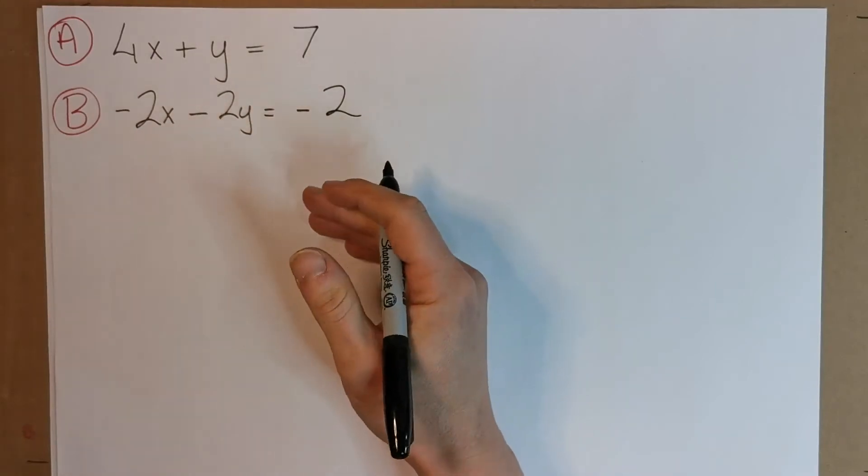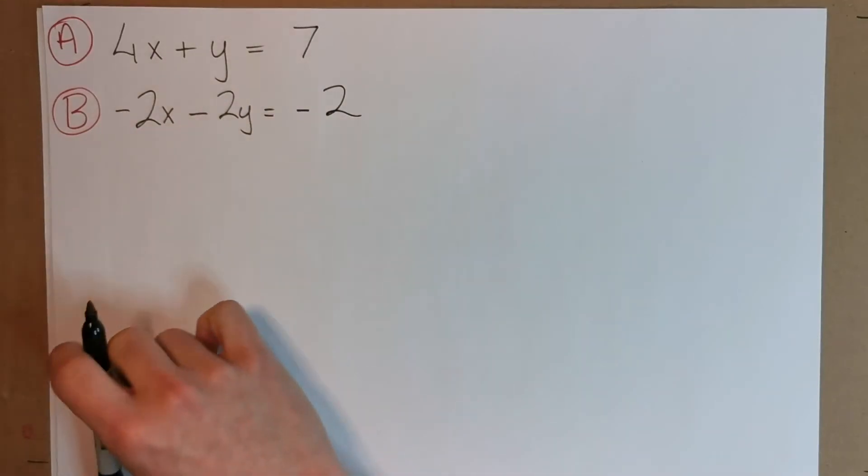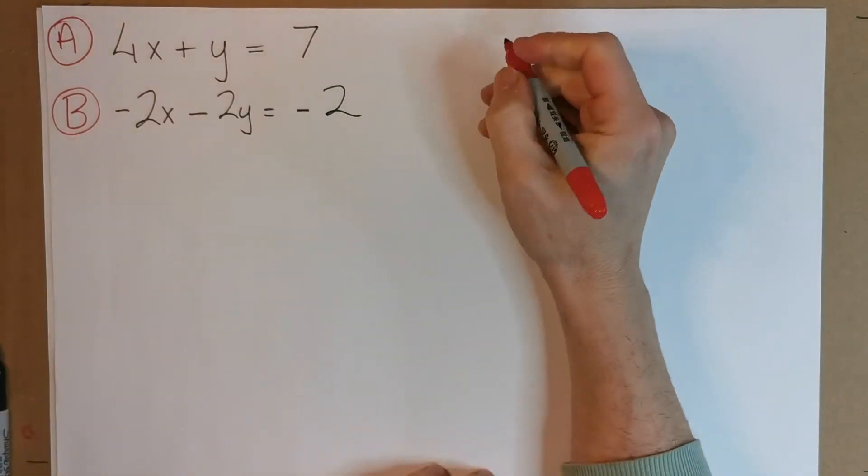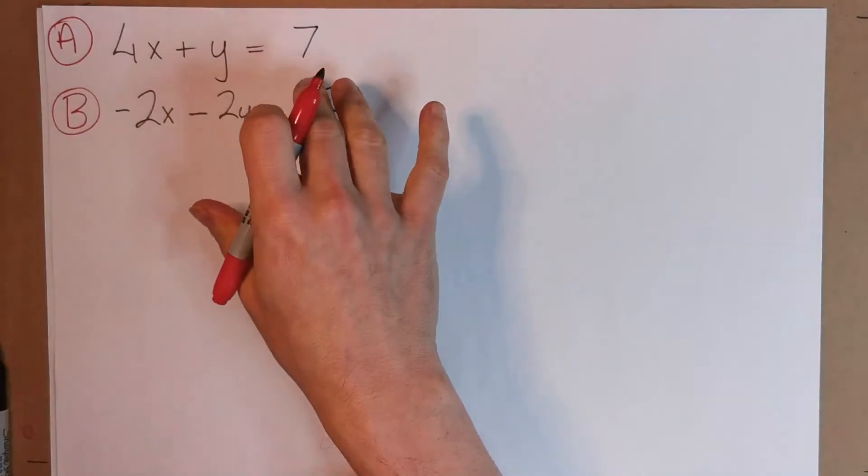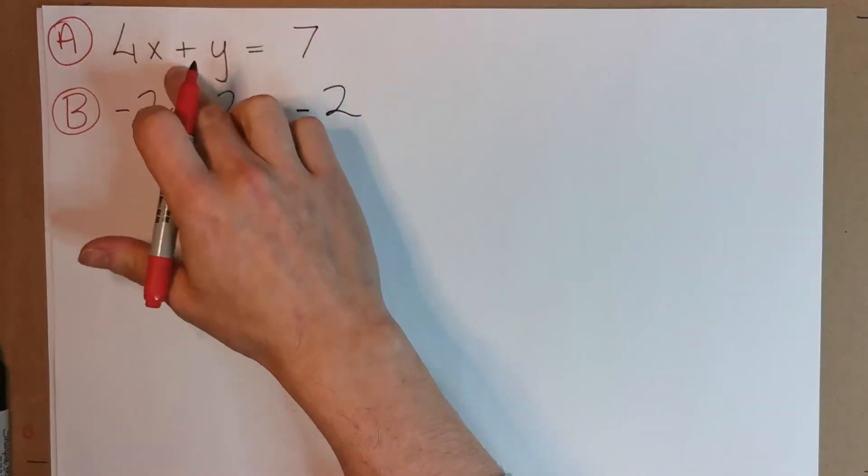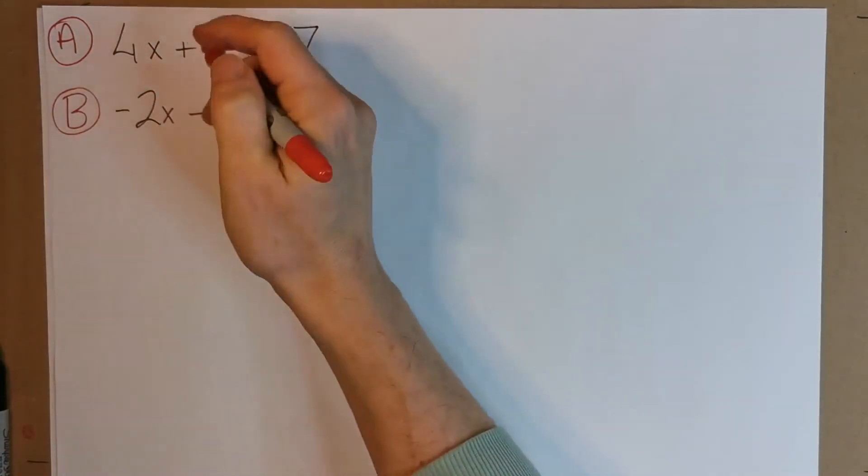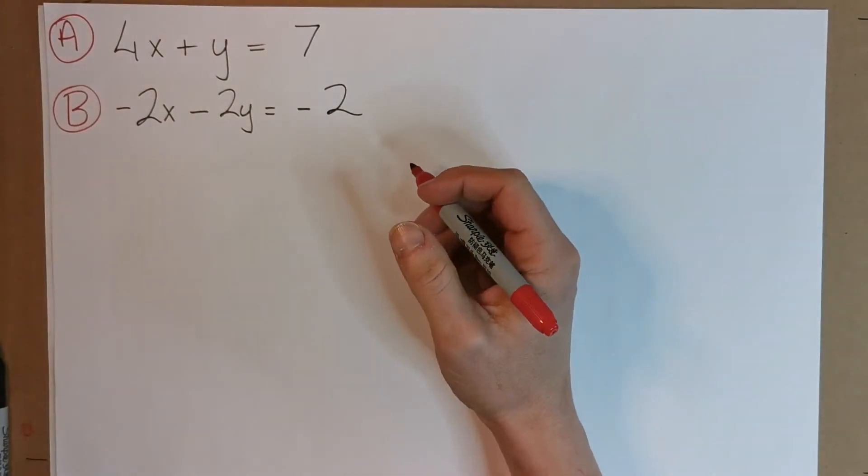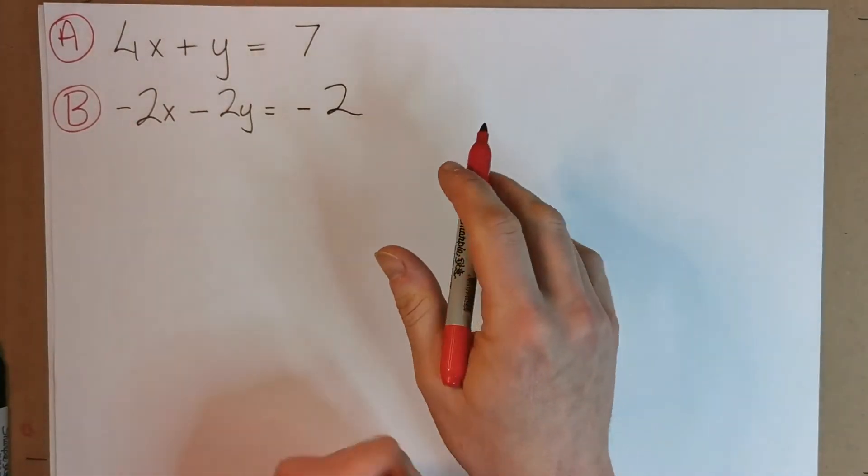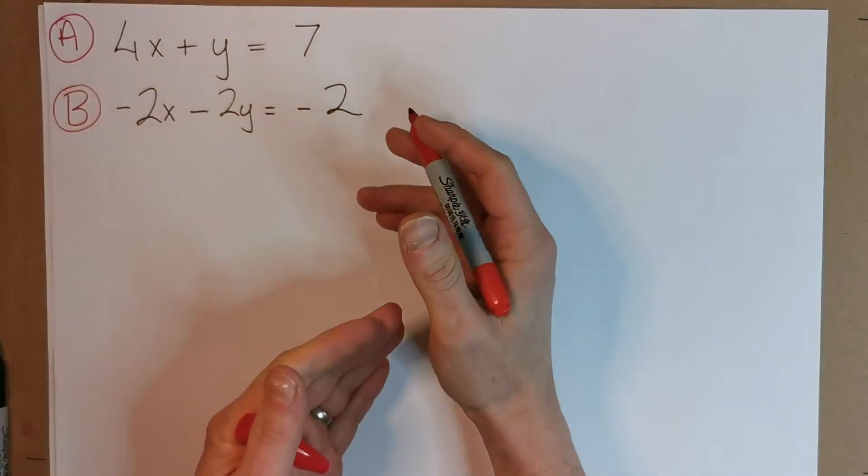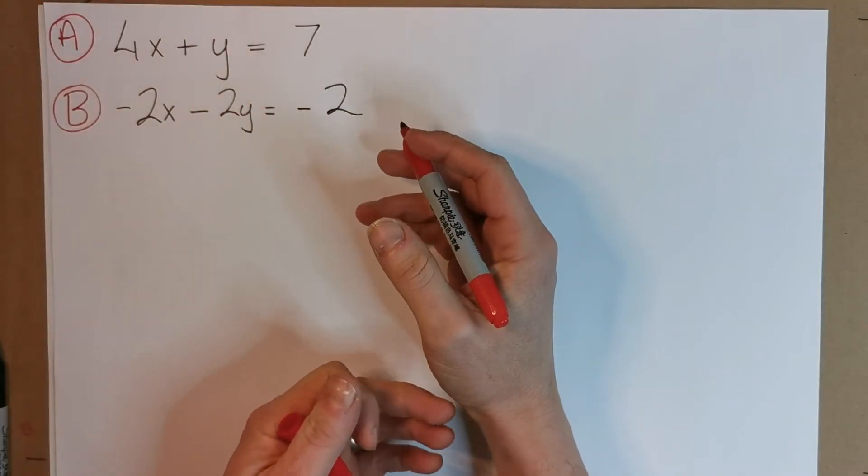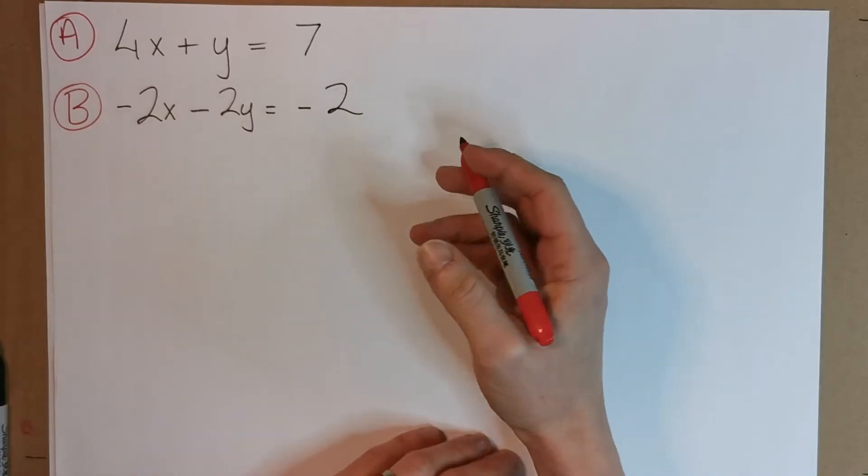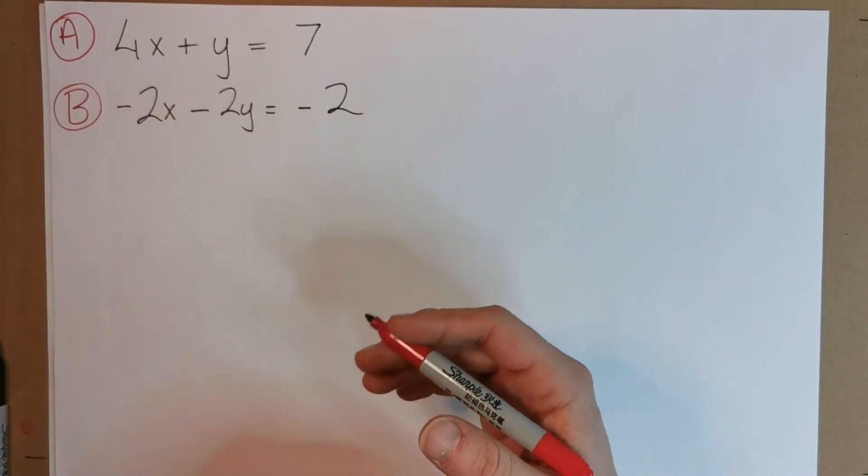Rather than match the coefficients, we're just going to try and isolate one variable. What I mean by that is, we're going to look for like a single positive x or a single positive y. I don't want minus x, I don't want minus y. If it's minus, just change all the signs. But if you start dividing to get down to a singular variable and you start getting fractions, this can get quite messy. So just be careful there, and maybe the matching coefficients method is better.